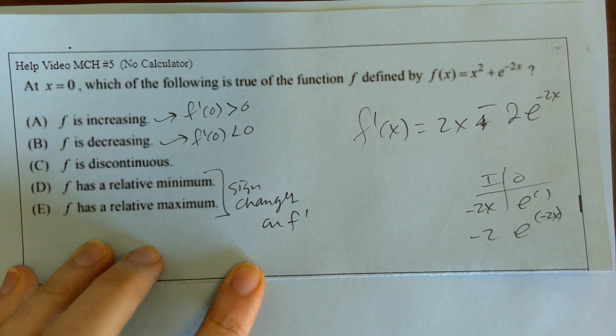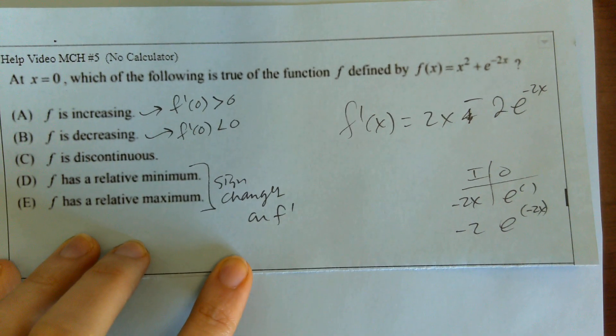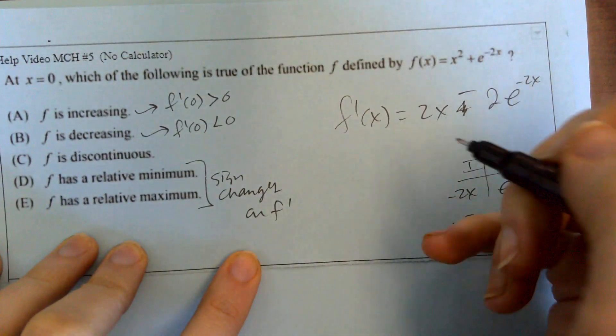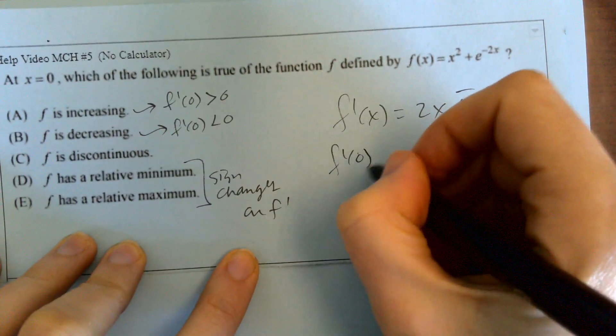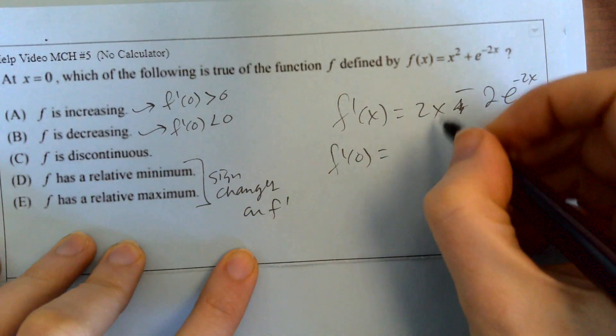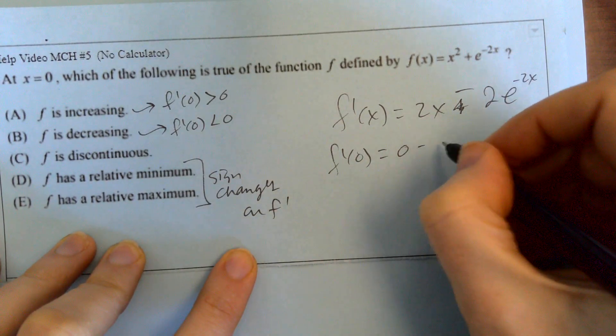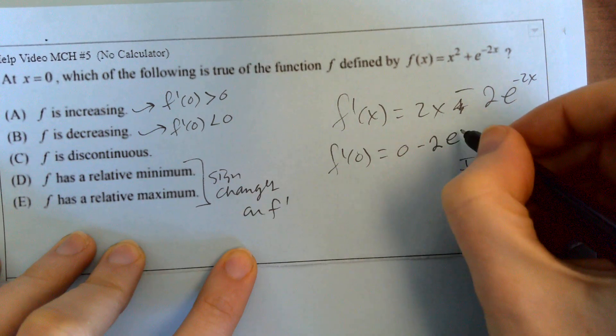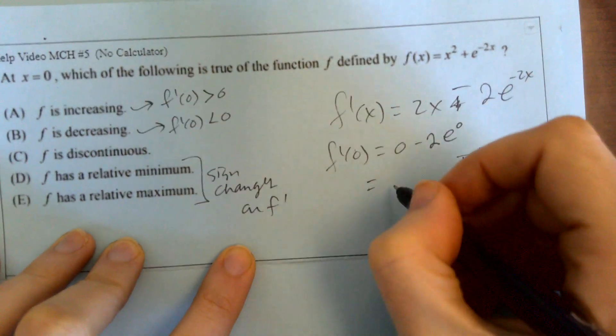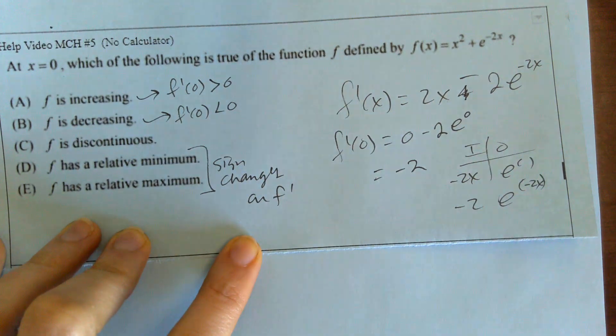All right, let's plug zero in and see if we get a positive or a negative number. That would be great if we did. So f prime of zero, 2 times zero is just zero, minus 2 e to the zero, that's just 1. So you end up getting negative 2.